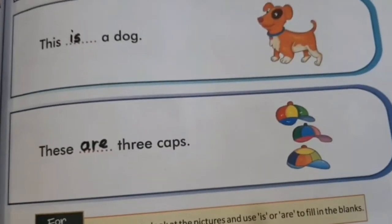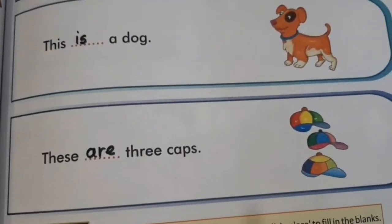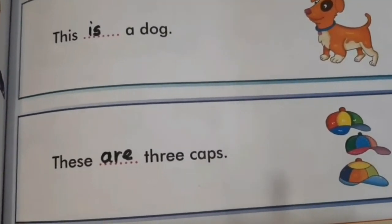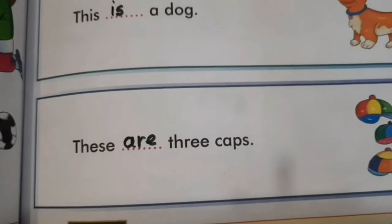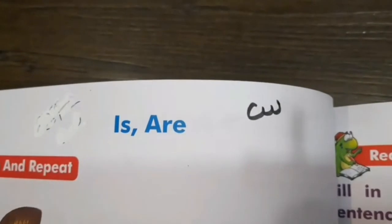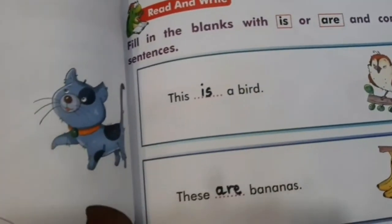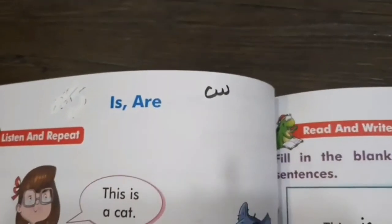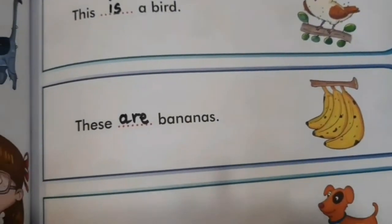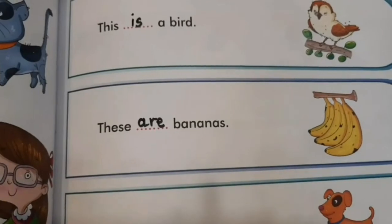Toh now children, you are clear with the concept of is and are. Toh chalo ek baar revise karte hain. 'Is' hum use karte hain one ke liye. Aur 'Are' hum use karte hain more than one ke liye. Agar ek chiz ho toh hum use karenge 'Is', aur one se zyada ho toh 'Are'. Okay children, now let's move to the next page.